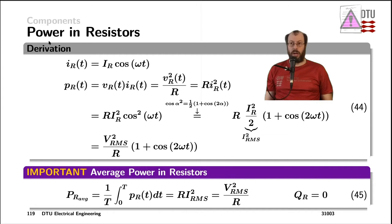To investigate the power in resistors, we once more use a sinusoidal test signal. As we know from the Fourier series, we can use a number of sine and cosine waves to represent any other repetitive signal. And for sinusoidal waveforms, the trigonometric functions come very handy as they are all related to each other, as we will see in a bit.